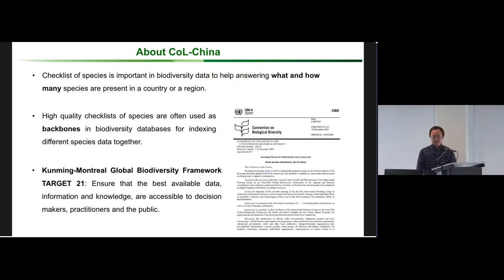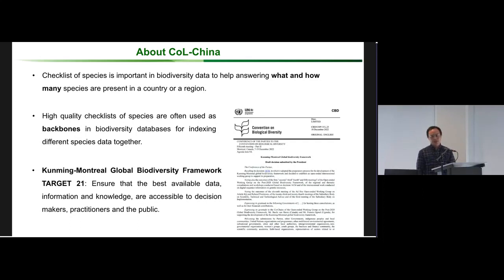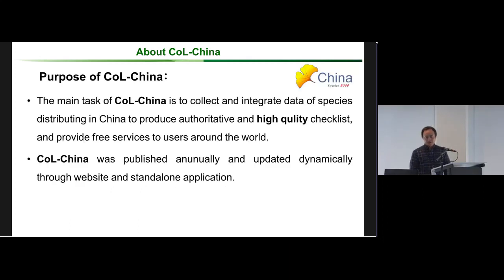A checklist of species is important, as Olaf said, and it answers what and how many species we have in a country or region. High quality checklists of species are often used as backbones in biodiversity databases for indexing different species data.